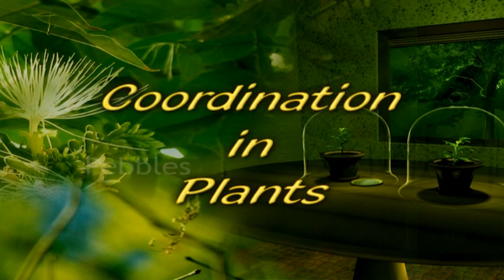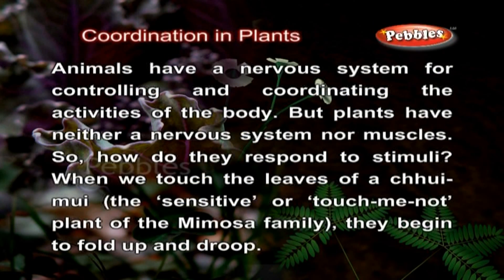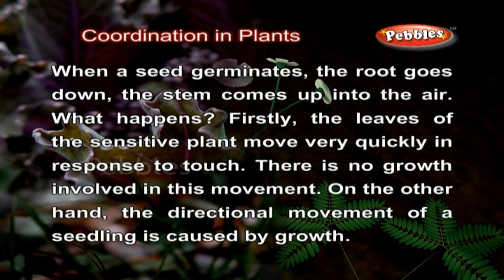Animals have a nervous system for controlling and coordinating the activities of the body, but plants have neither a nervous system nor muscles. So how do they respond to stimuli? When we touch the leaves of a chhui-mui, the sensitive or touch-me-not plant of the mimosa family, they begin to fold up and droop. When a seed germinates, the root goes down and the stem comes up into the air.